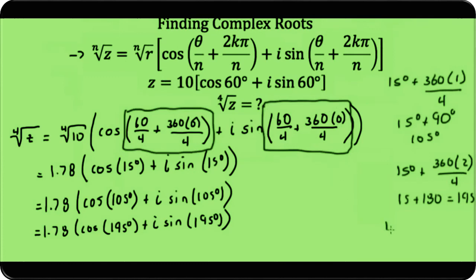360 times 3 divided by 4 is 270. So 15° plus 270° is 285°. So my fourth solution is